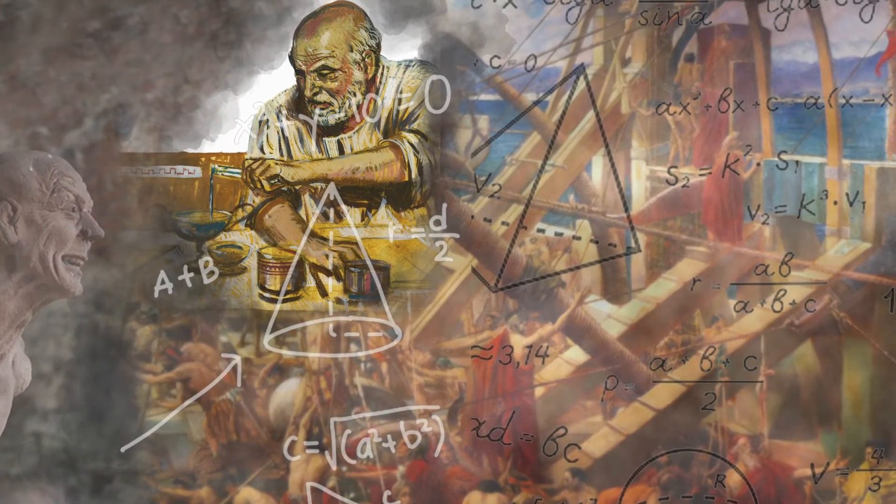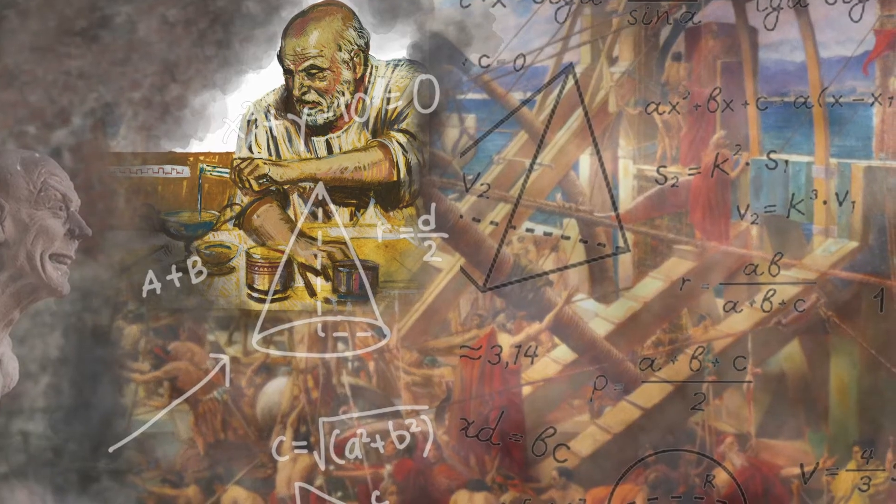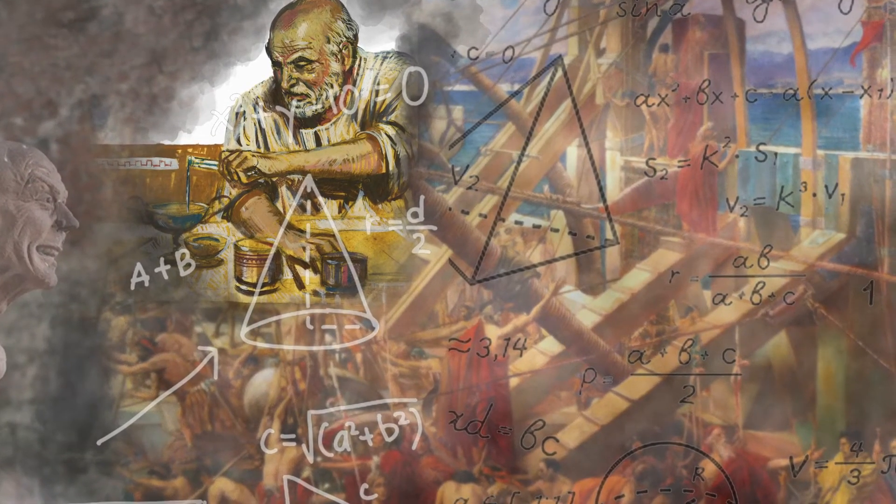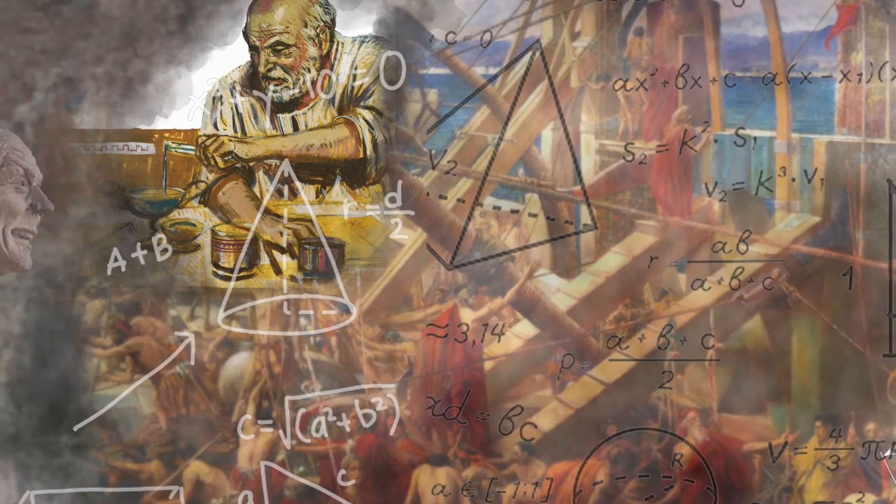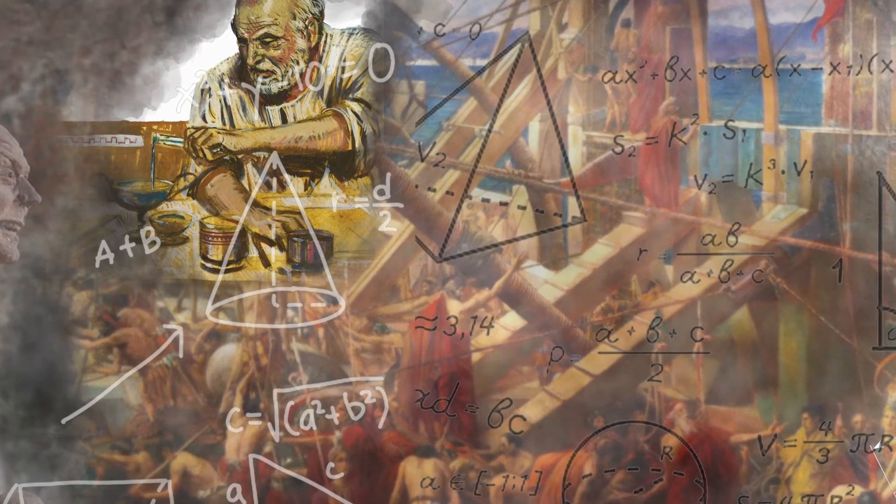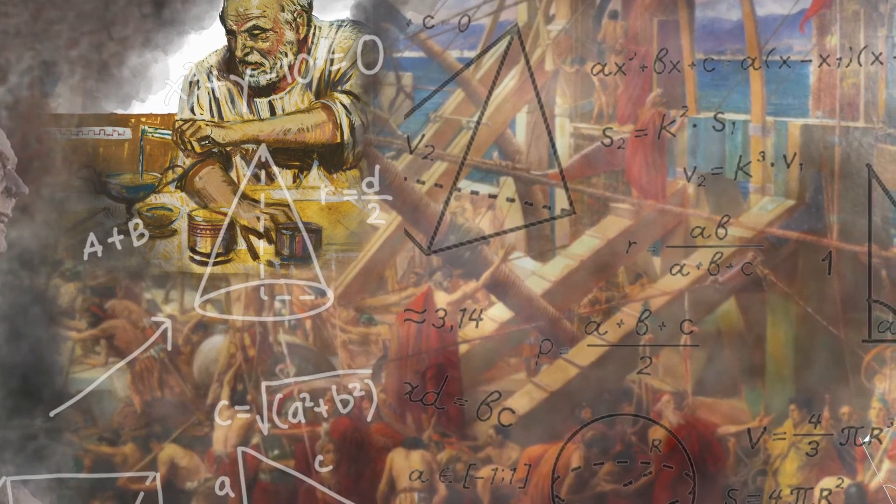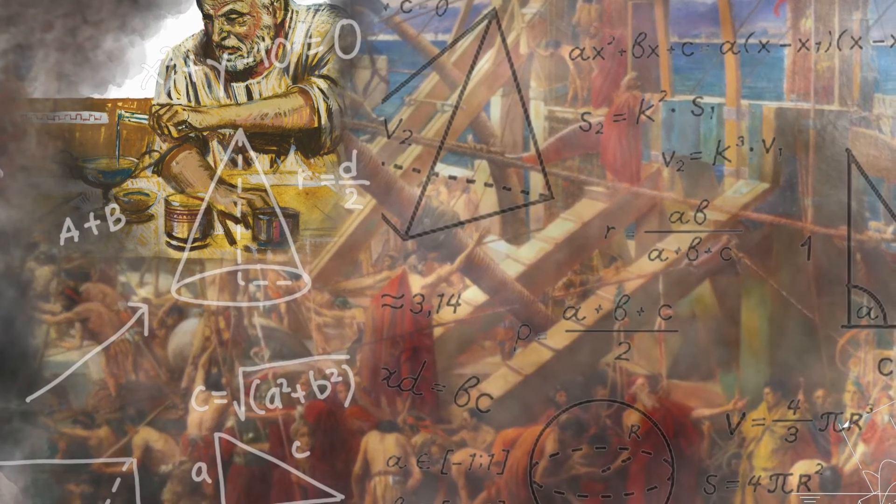Archimedes' fame was largely due to his ability to use mathematical concepts to solve real-life problems. The ship launching and screw inventions are prominent examples. He also produced formulae for working out the volumes and areas of regular shapes, such as spheres and cones.